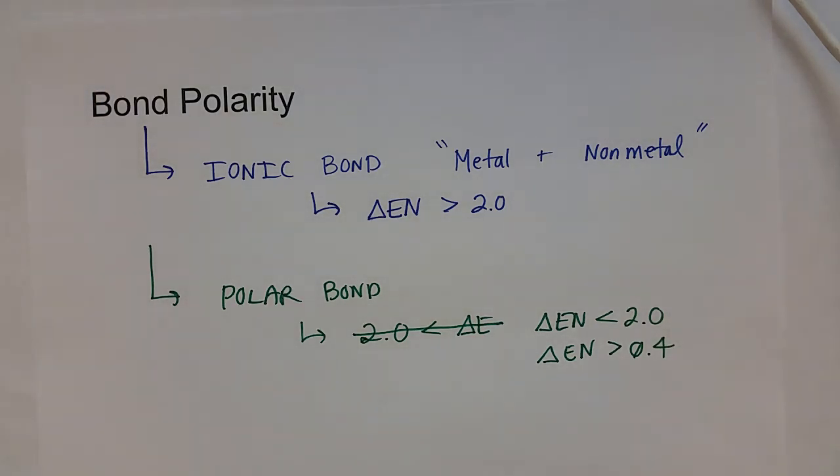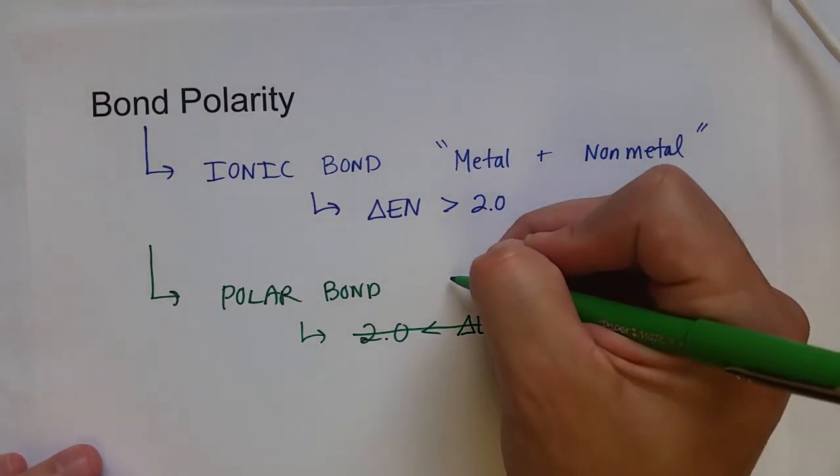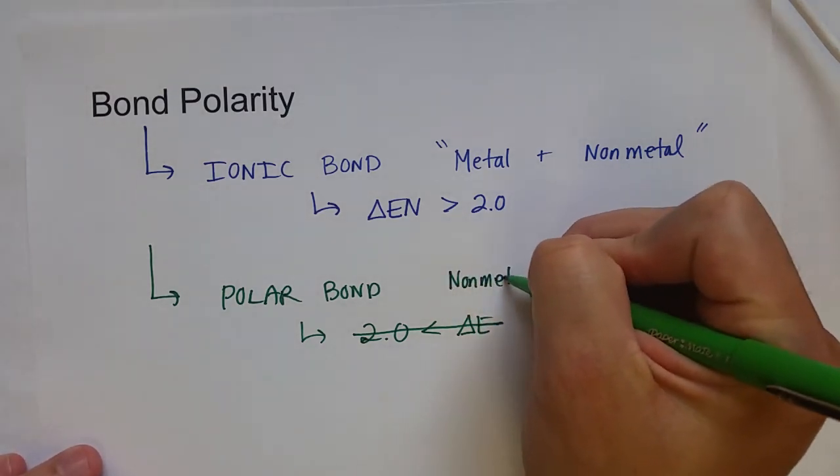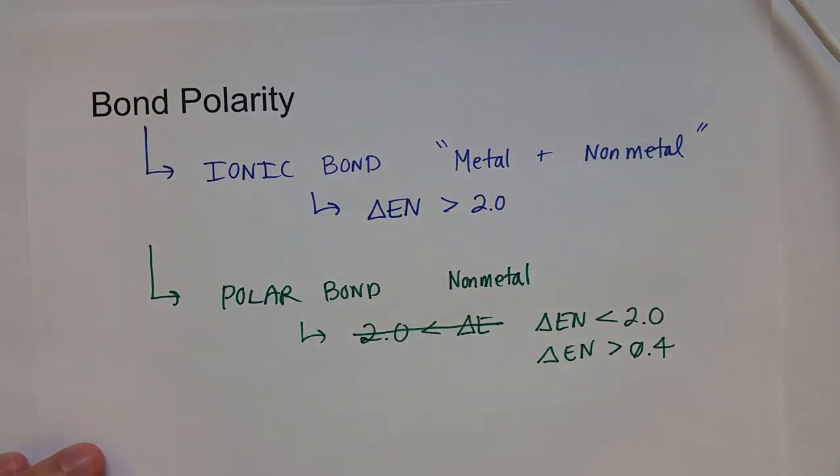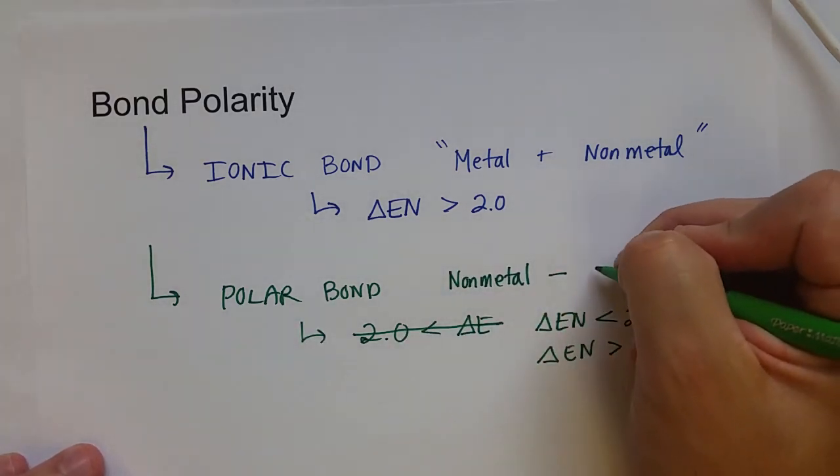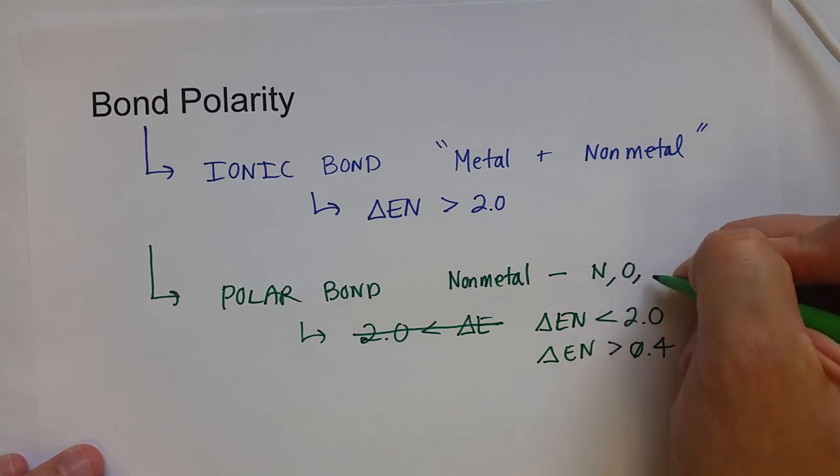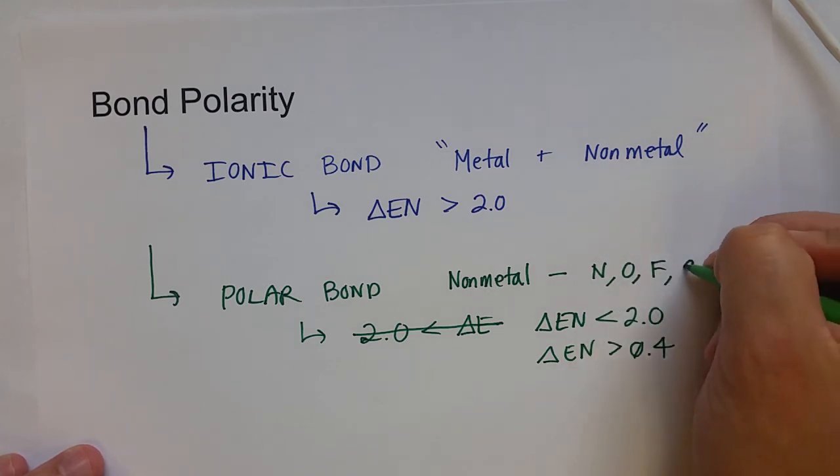This is usually when a nonmetal is bonded to a very electronegative atom like nitrogen, oxygen, fluorine, or chlorine.